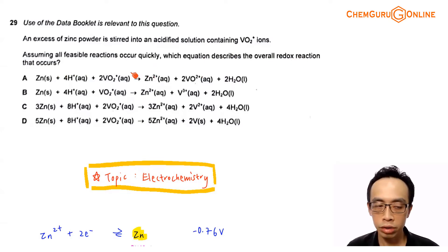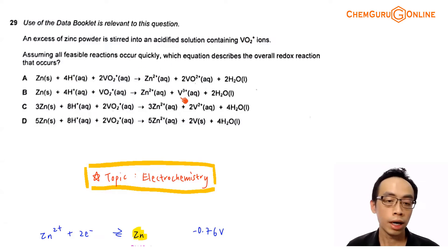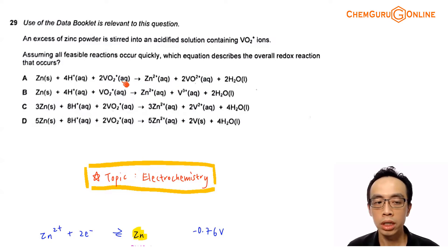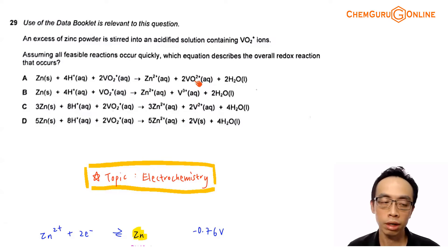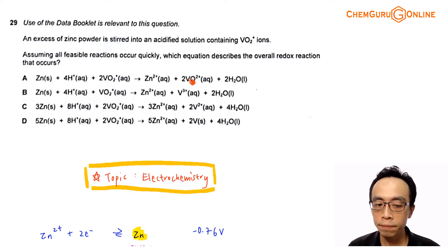We have four reactions between zinc and VO2+, where the products are slightly different. The zinc will be oxidized to Zn2+. If you look at the options, the vanadium will be reduced to different species. Since zinc undergoes oxidation, the vanadium species should undergo reduction, and they are reduced to different oxidation states.